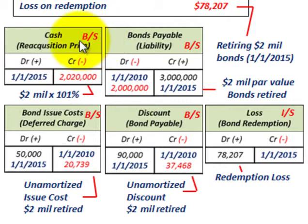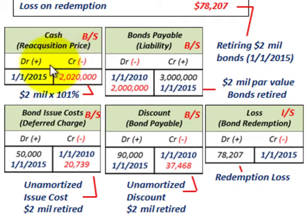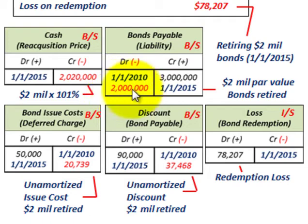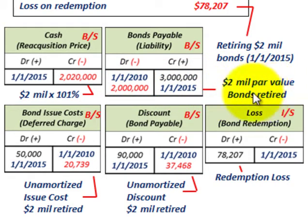Now let's look at the journal entries for the redemption, setting aside interest expense and issue cost expense — just focusing on the redemption itself. We debit bonds payable for $2 million to remove the par value of the retired bonds from the balance sheet. We credit cash for $2,020,000, which is the reacquisition price — the $2 million face value times 101%.